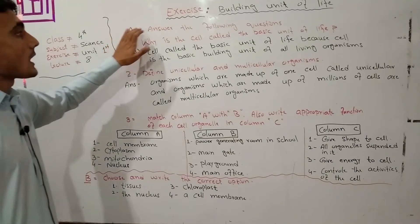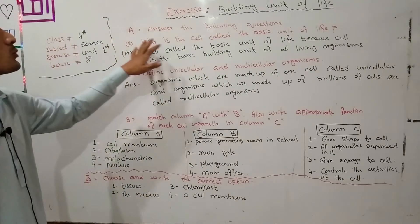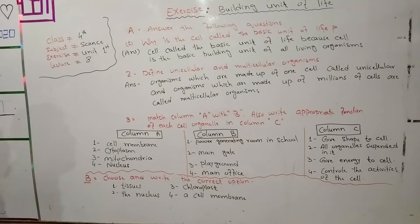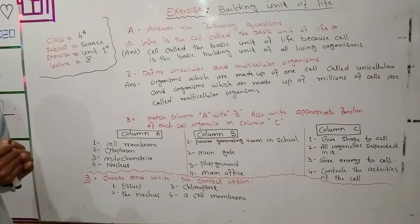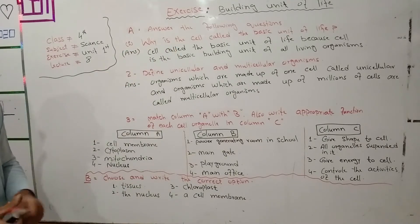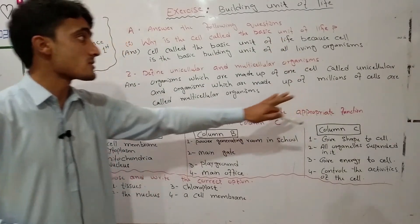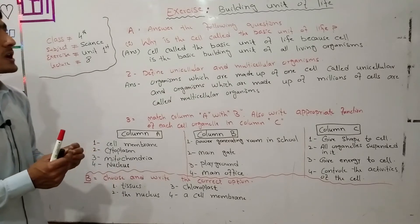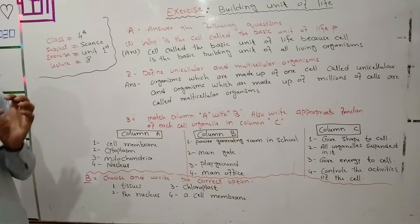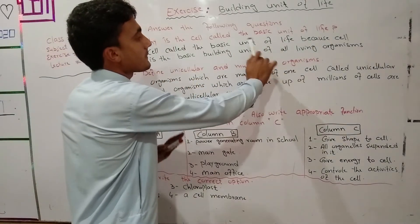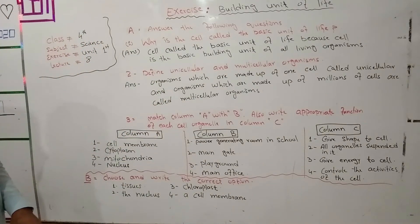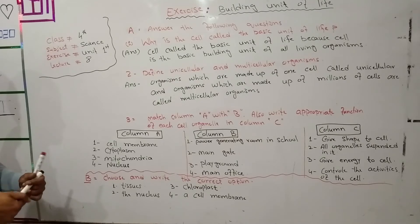Question number 1: answer the following questions. First question: why is the cell called the basic unit of life? Cell is called the basic unit of life. 'Basic' means fundamental, 'unit' means one, and 'life' means zindagi. Because cell is the basic unit of life — cell is the tamam jandaru.